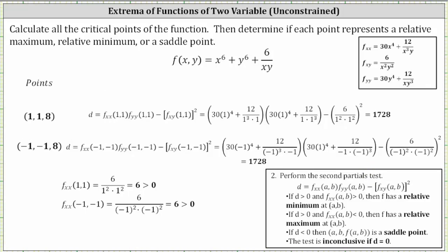With the second-order partials copied for reference, we evaluate d at (1, 1, 8) by plugging x equals one and y equals one into the formula for d, giving d equals 1,728. At (-1, -1, 8), we get d equals 1,728 as well. Since d is greater than zero at both critical points, and the second-order partial with respect to x is also greater than zero at both points, we have relative minimums at both critical points.